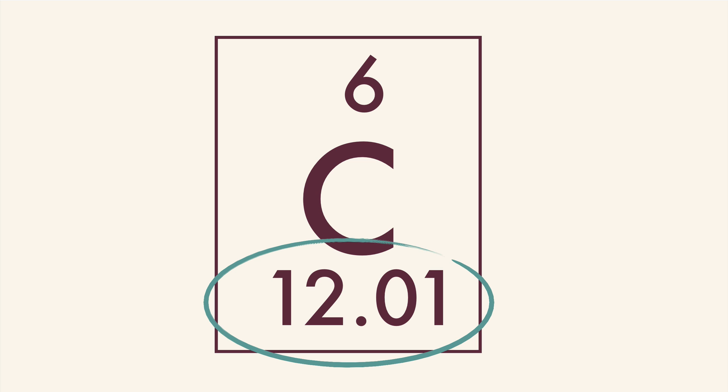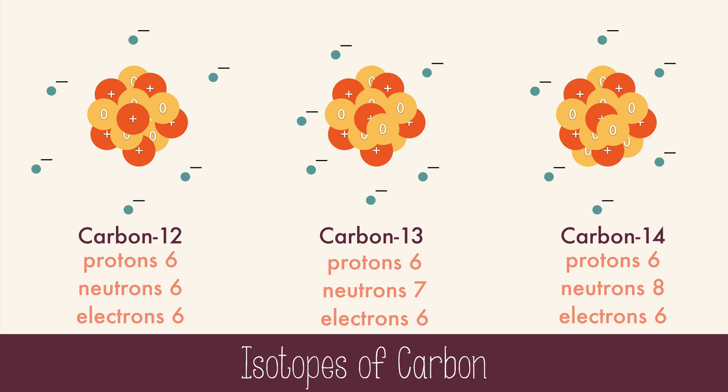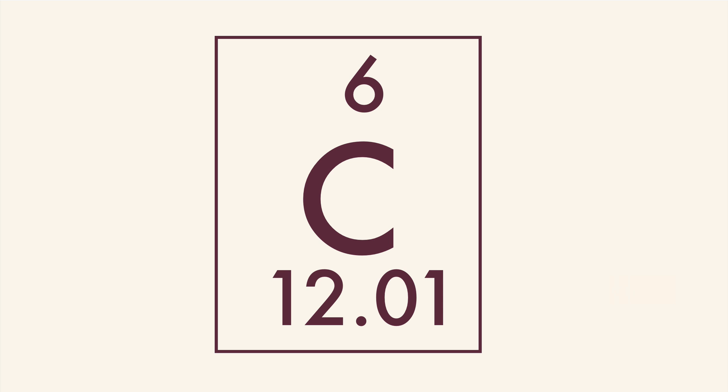This is because there isn't just one isotope of carbon. There are multiple isotopes of carbon. They have different numbers of neutrons, and therefore different mass numbers. We don't use mass number on the periodic table because there are multiple isotopes for many of the elements.